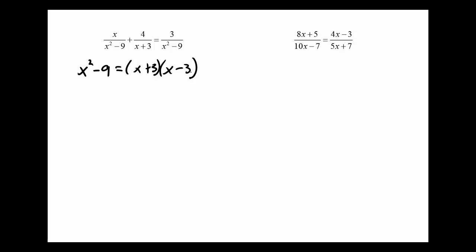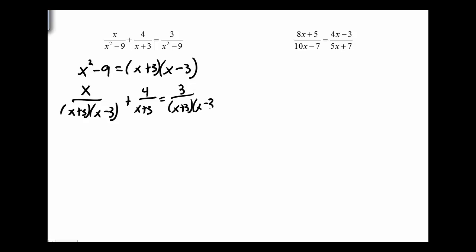Back to this problem: x squared minus 9 is really (x plus 3)(x minus 3), so I'm going to rewrite the denominator that way. Now, what do I multiply by? I have to multiply everything by (x plus 3)(x minus 3) since that would be our common denominator. Before I do, I need to state that x cannot be negative 3 — because that would make (x plus 3) equal to zero — and x cannot be 3, because that would make (x minus 3) equal to zero.